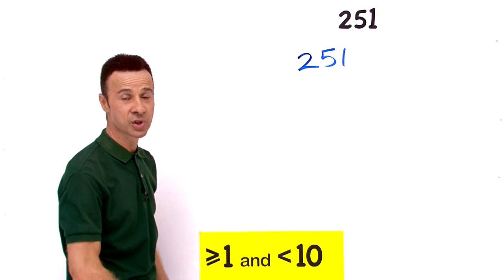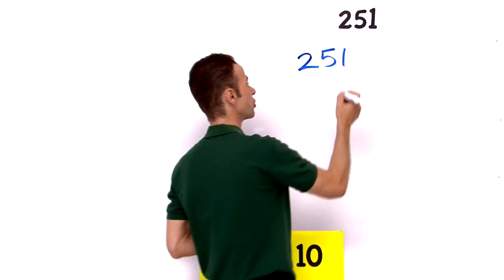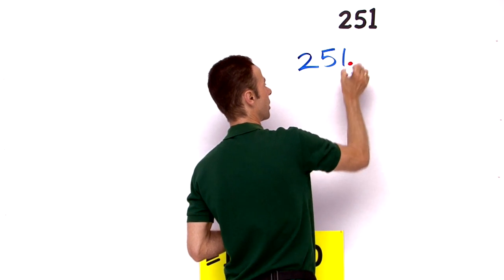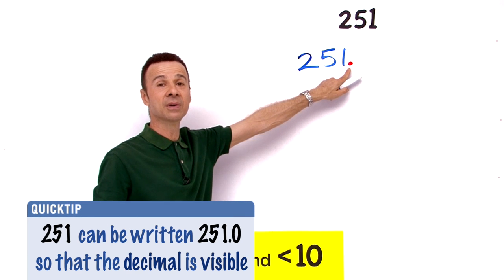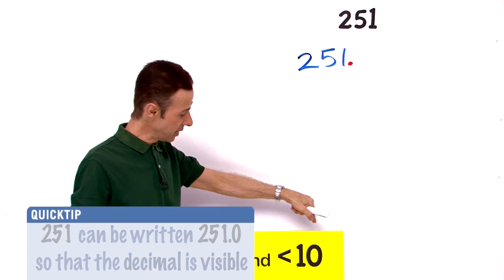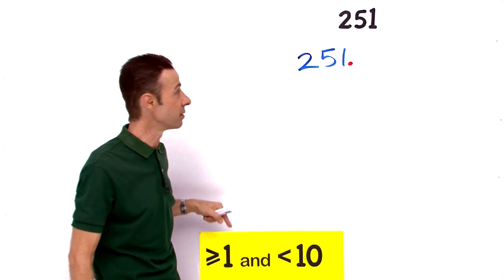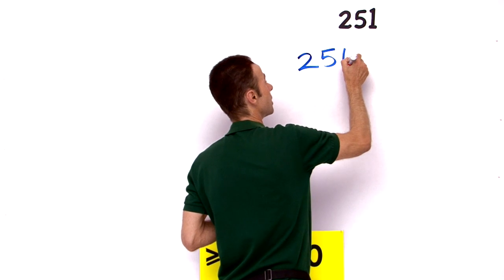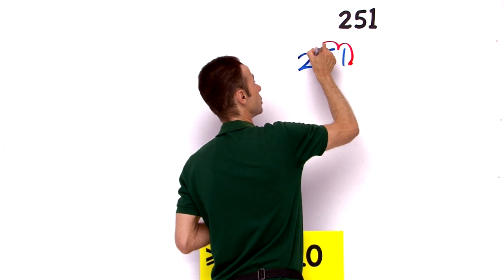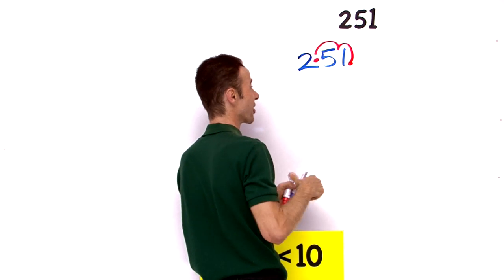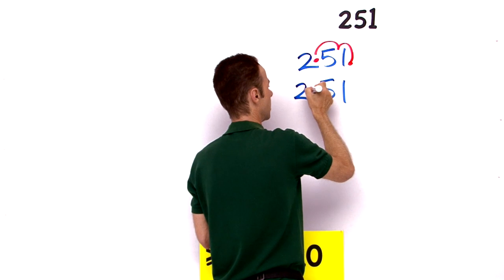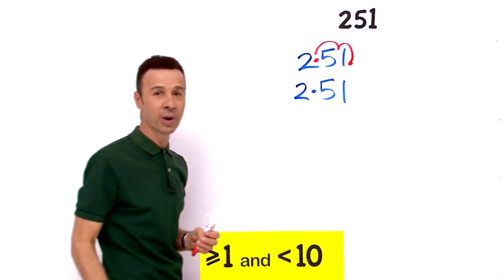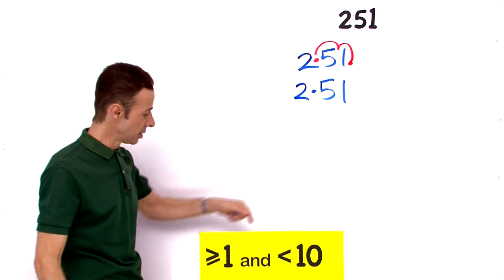To do that, I'm going to take this number 251 and move the decimal place, which we can't see. Essentially it's right here. We don't usually write it, but if you have a whole number, the decimal place is usually there. We move it this way until we get a digit between 10 and 1. So I'm going to move it to the left one, two.